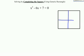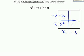So we've got our generic rectangle set up. We need it to be a square, so I need x and x. That'll give you my x squared. And I need to break up that negative 6x, so I need negative 3 and negative 3, because then that will give me negative 3x, negative 3x, and I have a square.